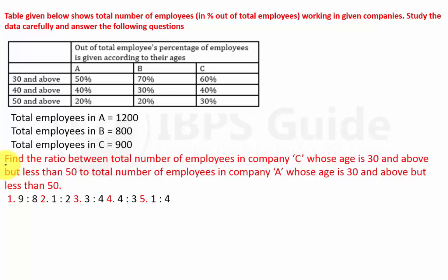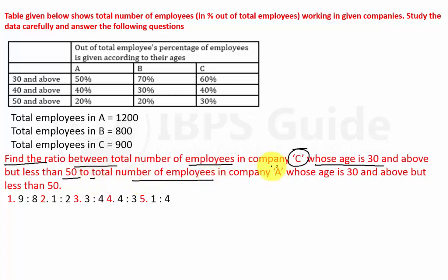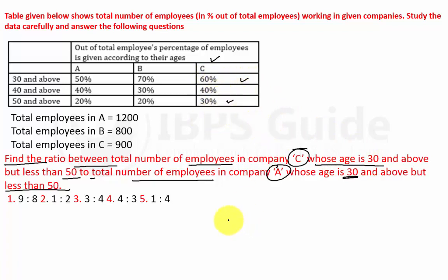Question 3: Find the ratio between the total number of employees in Company C whose age is 30 and above but less than 50, to the total number of employees in Company A whose age is 30 and above but less than 50. For Company C: 30 and above is 60%, and 50 and above is 30%, so 60 minus 30 gives 30%.